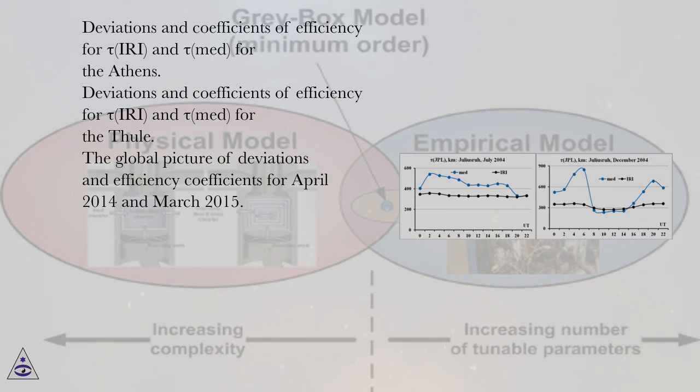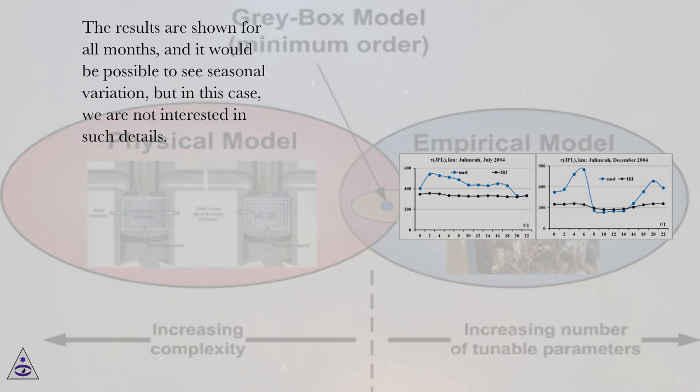The global picture of deviations and efficiency coefficients for April 2014 and March 2015. The results are shown for all months, and it would be possible to see seasonal variation, but in this case we are not interested in such details. More importantly, that there are too many cases for tau IRI when the ratio is less than 1, which means that the use of TEC worsens results.